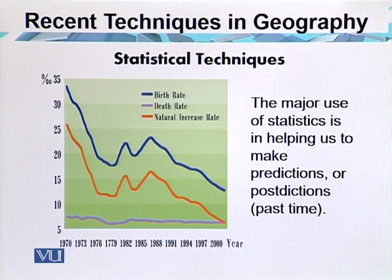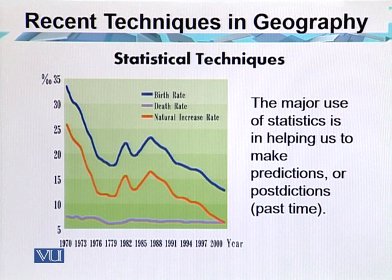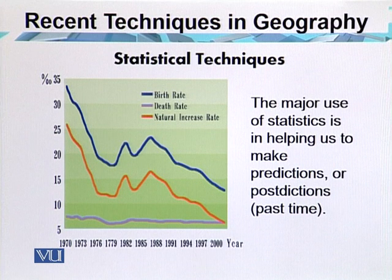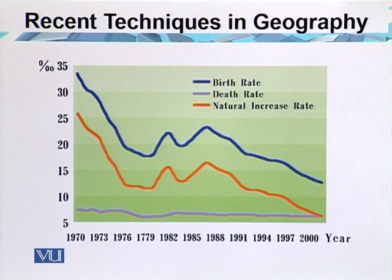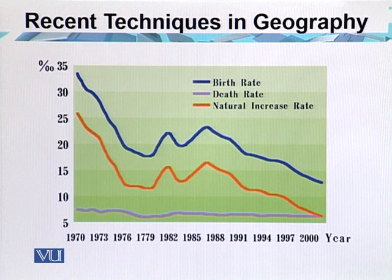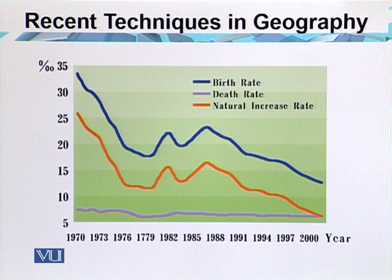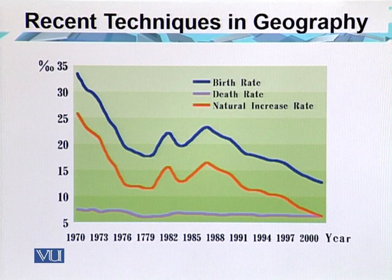The major use of statistics is in helping us to make predictions or post-dictions. This not only gives a picture of future growth but also deals with post-diction of the data. The past trend of growth gives us the story of the previous total number of the population, and the present trend of population growth gives us the future trend. Accurate prediction is only possible where a complete deterministic process is in operation, which will always produce identical results in identical circumstances. Some data behave in different ways at different times and must be dealt with under careful controlled conditions.